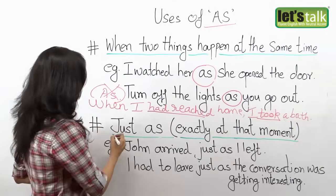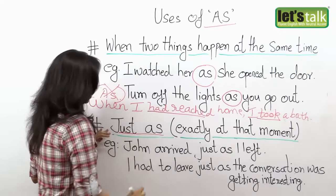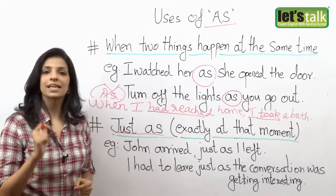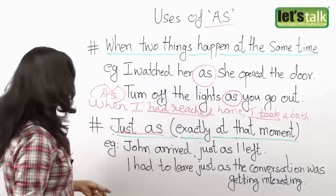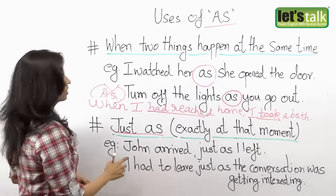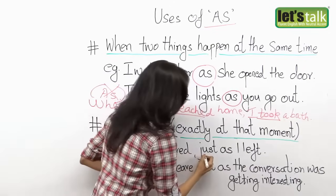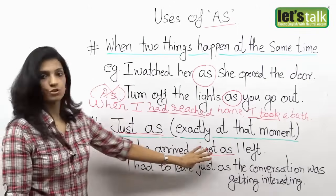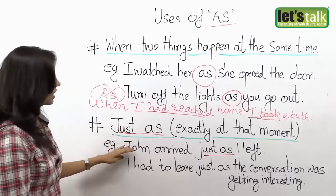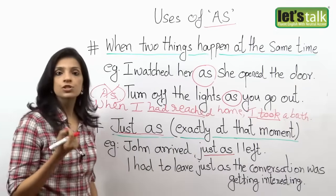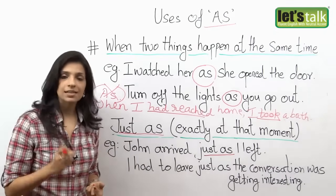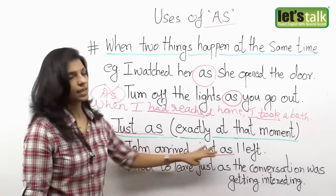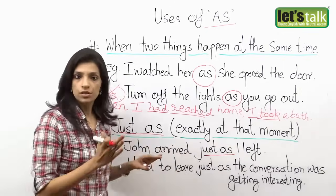Now let's take a look at 'just as'. We use 'just as' when you want to say something happened exactly at that moment. For example: 'John arrived just as I left.' You can even use this without 'just' — 'John arrived as I left' — but when you use 'just', it emphasizes that it happened exactly at that moment. So exactly when I left, John arrived.